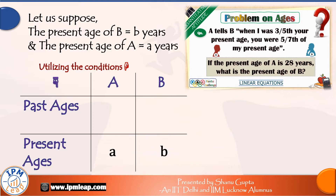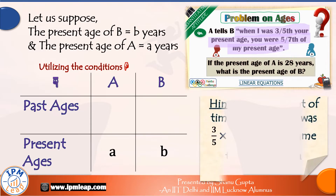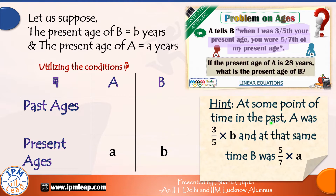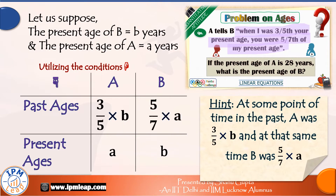I know that sometimes such question statements may be confusing, so read the question again. When I was three-fifth your present age, you were five-seventh of my present age. Think carefully — what does it mean? It means that at some point in the past, A was three-by-five times B, and at that same time, B was five-by-seven times A. So in this table, let us write their past ages in terms of our variables A and B. When A was (3/5)B, B was (5/7)A.